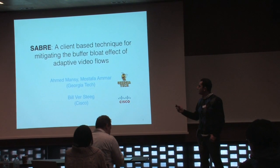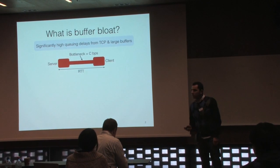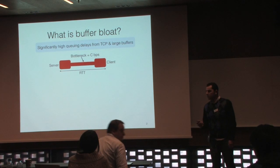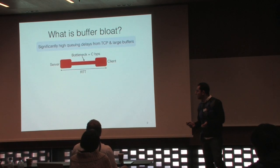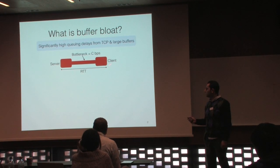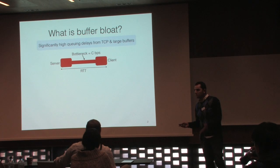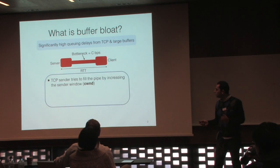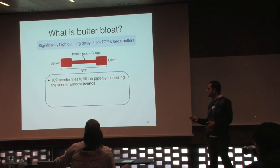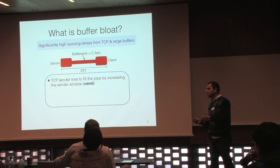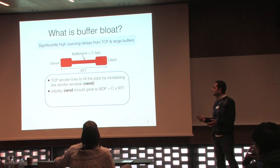It's a big title, and we have the buffer bloat here — we heard about it in the panel and in the morning. Buffer bloat is a phenomenon where we experience significantly high queuing delay resulting from the interaction between TCP and large buffers on the internet. You have a client and a server with a bottleneck link of capacity C bits per second, round-trip delay RTT. TCP tries to fill up the pipe by linearly increasing the congestion window (CWin), which is the number of bytes the sender can send before waiting for an ACK.